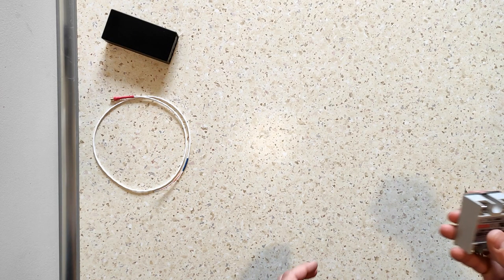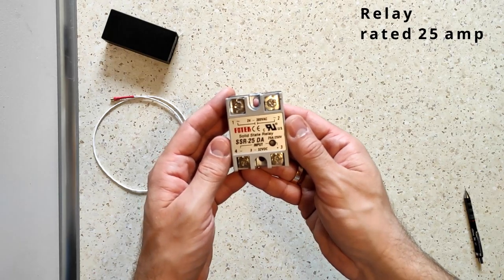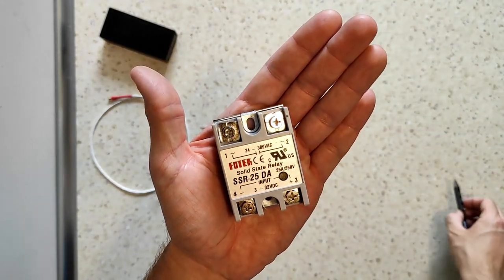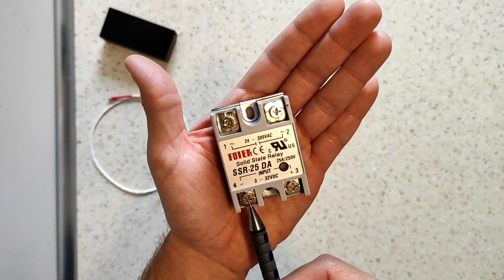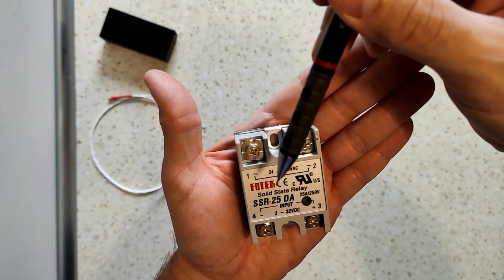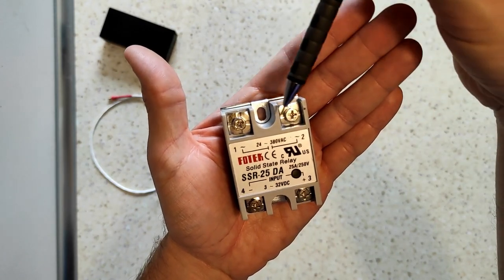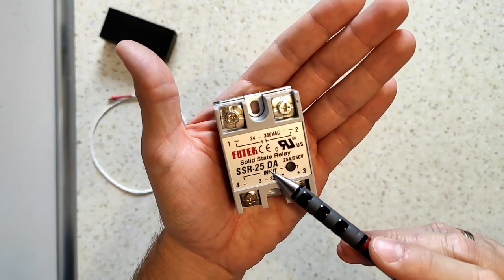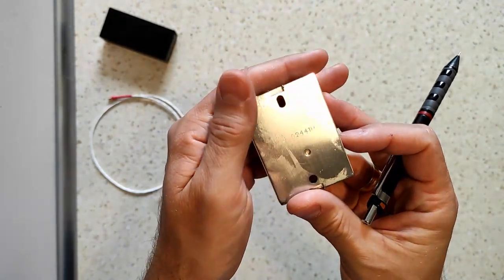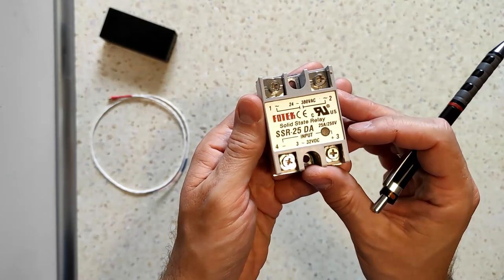The last important component is the solid state relay. It's a box with 4 terminals that goes inside the espresso machine. Terminals numbered 4 and 3 are used to connect the relay to the controller. Terminals 1 and 2 will connect to the cables inside Gaggia Classic that currently connect to the thermostat. I chose a unit rated for 25 amps, which is plenty in this application.